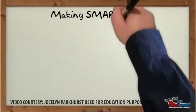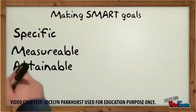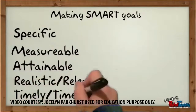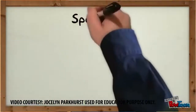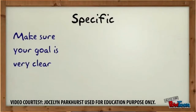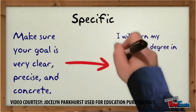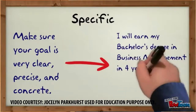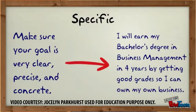Making smart goals — specific, measurable, attainable, realistic or relevant, and time bound. Specific means make sure your goal is very clear, precise, and concrete. An example of a specific goal: I will earn my bachelor's degree in business management in four years by getting good grades so I can own my own business.